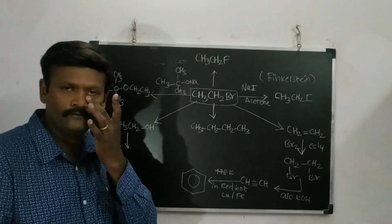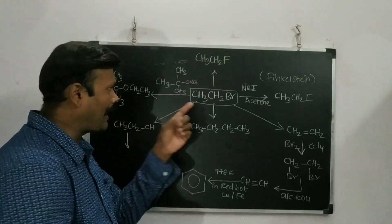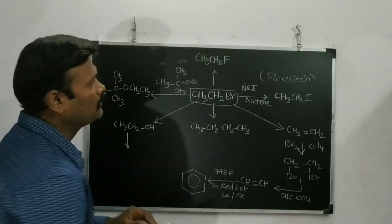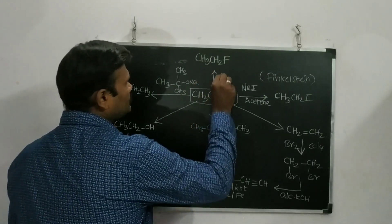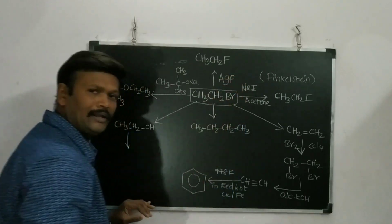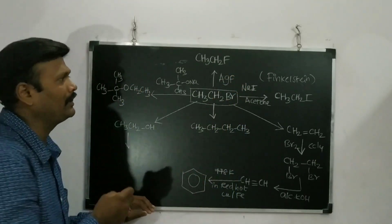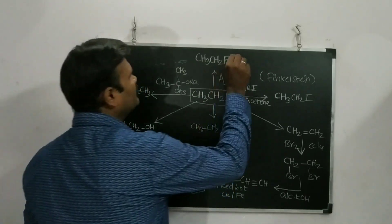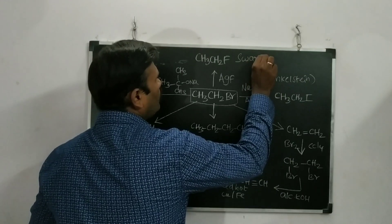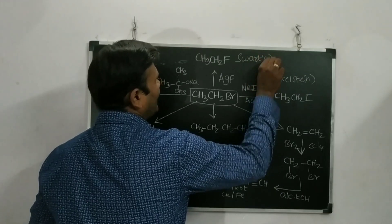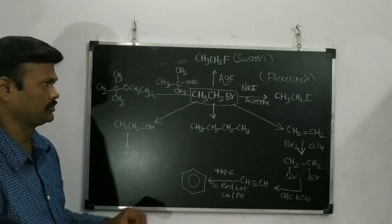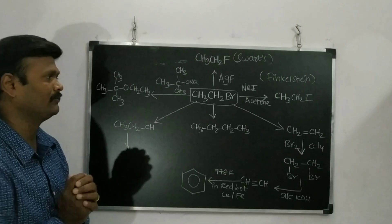Another naming reaction: halides can be converted into the respective fluorides using AgF as a fluorinating agent — for example, CH3CH2Br is converted to CH3CH2F. This reaction is called the Swartz reaction.